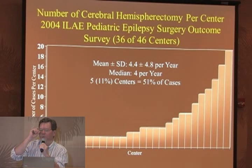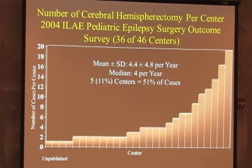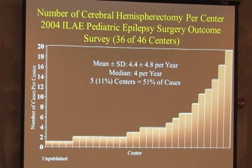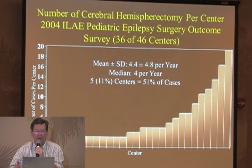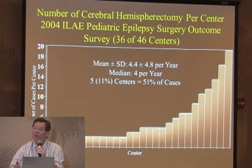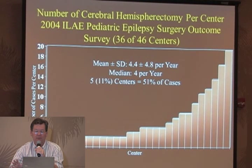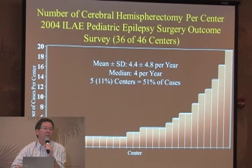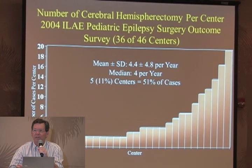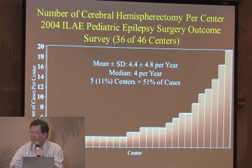An important point for hemispherectomy from this survey: out of the number of resections, about 20% were hemispherectomies. Of the 46 centers, 36 reported doing this operation - so not every pediatric center was performing hemispherectomies. The number of cases per center ranged from one up to 20, and the center with 20 cases was in Asia. The median was about four per year, and five centers - only about 10% of all of them - contributed 50% of all cases done. So generally, a few places do a lot of these, and many centers do few or none.